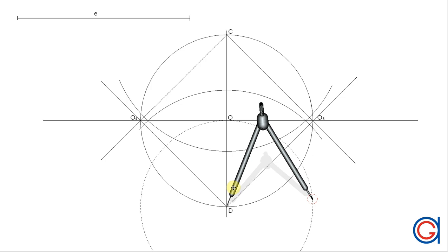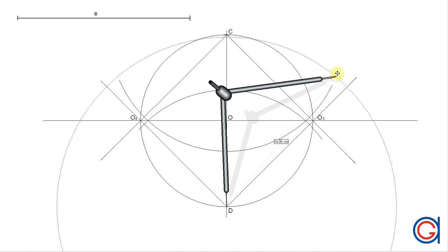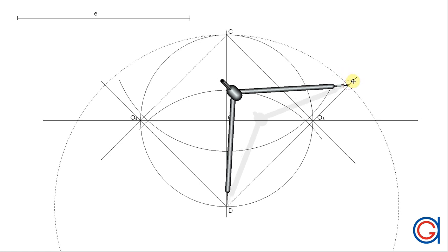Now, setting the compass on the point D with radius DC, which is the length of the given minor axis E, we draw an arc with a thicker line from the elongated line at O3 to the elongated line at O4.